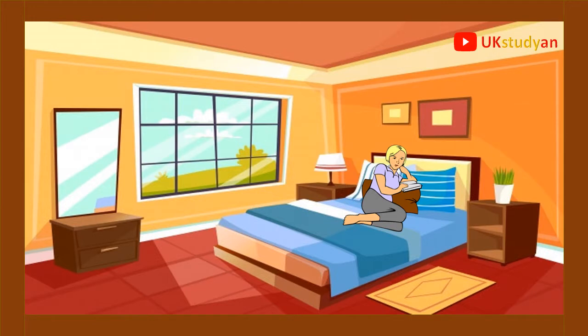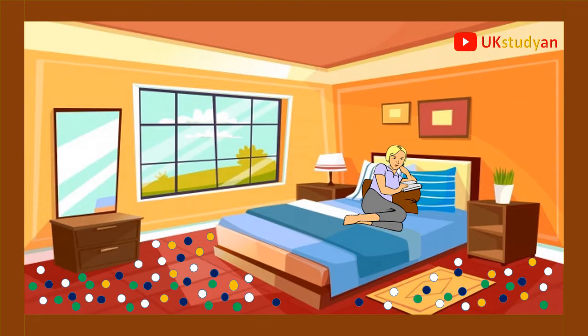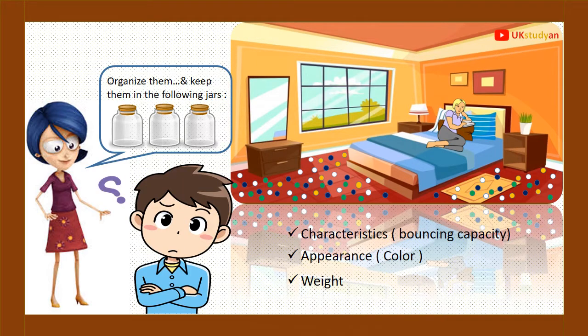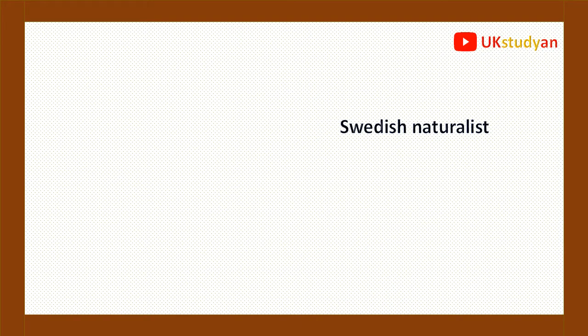Wonder for a while that marbles are spreading on the floor of your room and your mom asks you to organize them and keep them in jars. Now you are confused about how to organize them, and you have options like characteristics, the bouncing capacity, appearance, color, and weight. Which option are you going to choose?